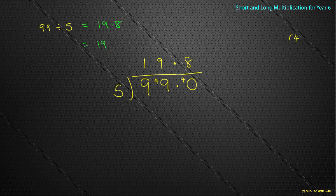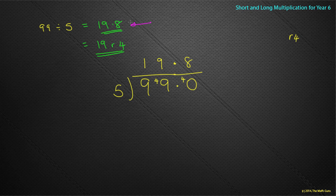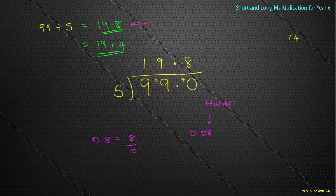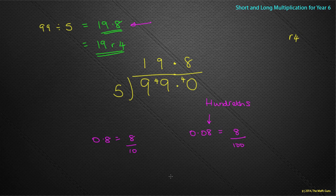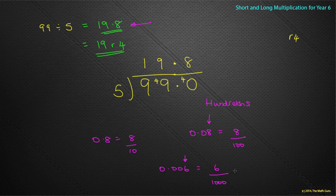You could have written that as 19 remainder 4. But remember, in secondary school or year 7, you won't be using remainders anymore. So unless a question asks otherwise, it might be a nice idea to start thinking in decimals. Again, 0.8 stands for 8 tenths. What does 0.08 stand for? Well, that's in my hundredths column, so that's the same as 8 over 100 — eight hundredths. And 0.006 is in the thousandths column, so that's 6 thousandths.